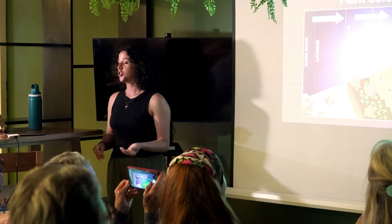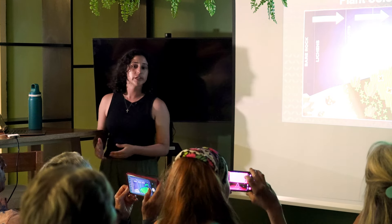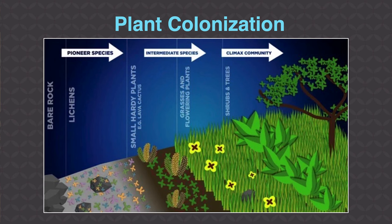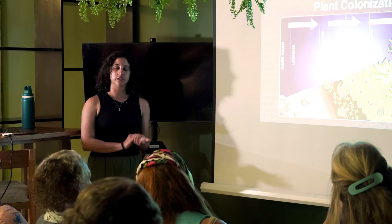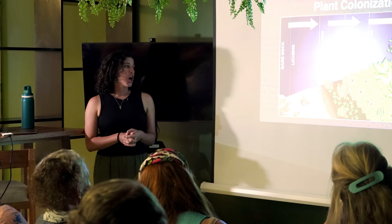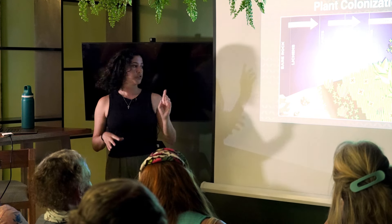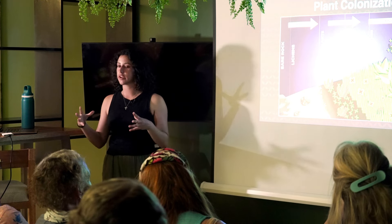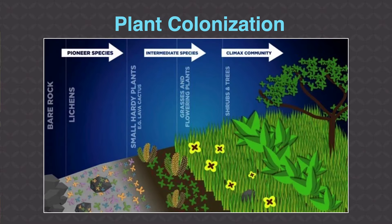Soil formation forms through the breakdown of rocks. Lava rock is very fertile and creates fertile soil. First you have the introduction of mosses and lichens — things that can grow on rocks and begin breaking down the soil. Then you have the introduction of pioneer species — the species that first come into an environment when there is a disruption like lava formation. These are smaller plants like the lava cactus. Eventually grasses and small flowering plants arrive, before larger trees and shrubs create a complex ecosystem.